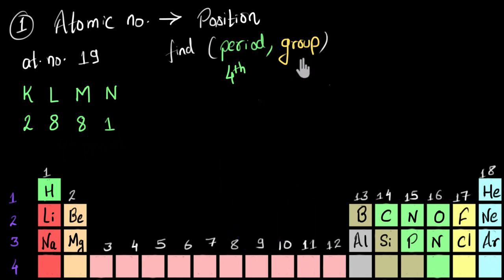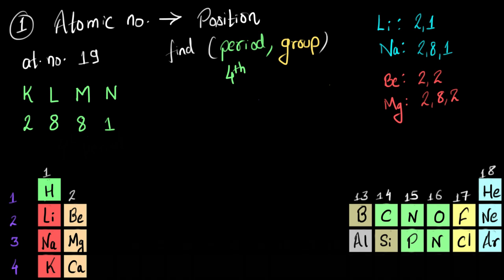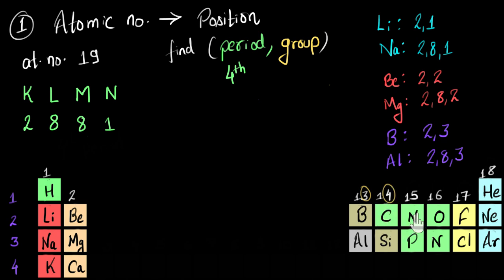Now let's find which group it belongs to. All elements in the same group have the same number of valence electrons. Elements of group 1 all have one valence electron; group 2 has two; group 13 has three valence electrons — for example, boron and aluminium. Group 14 has four valence electrons, group 15 has five, group 16 has six, group 17 has seven, and group 18 has eight valence electrons. In our syllabus, we are only concerned with elements up to calcium, so we won't deal with elements in groups 3 to 12.